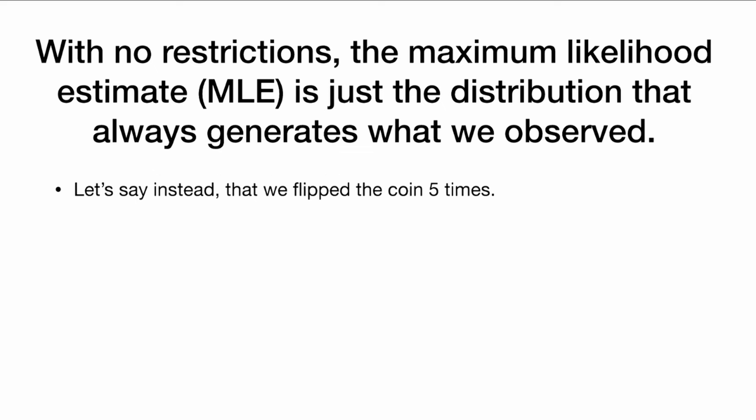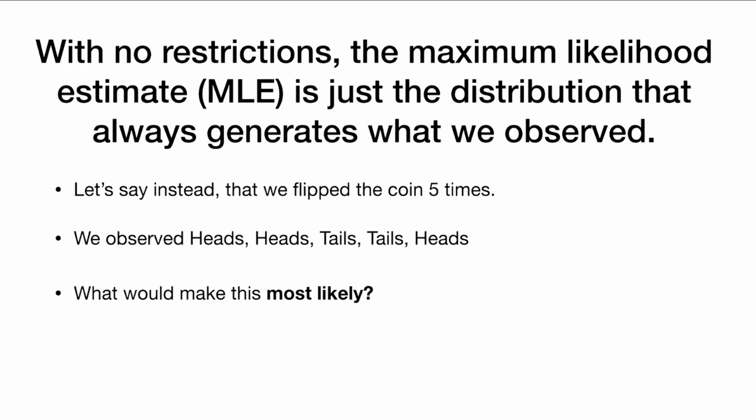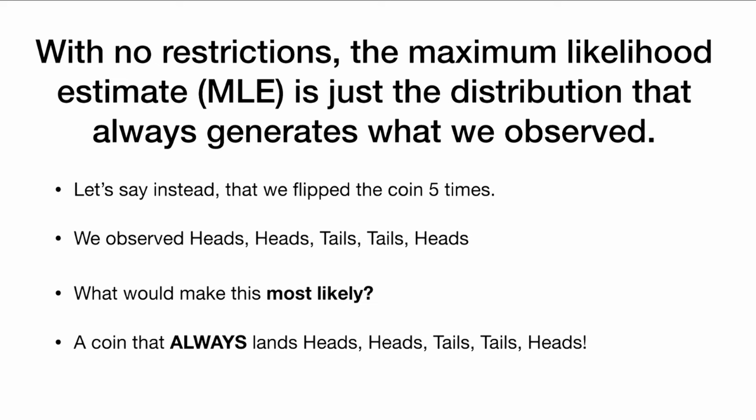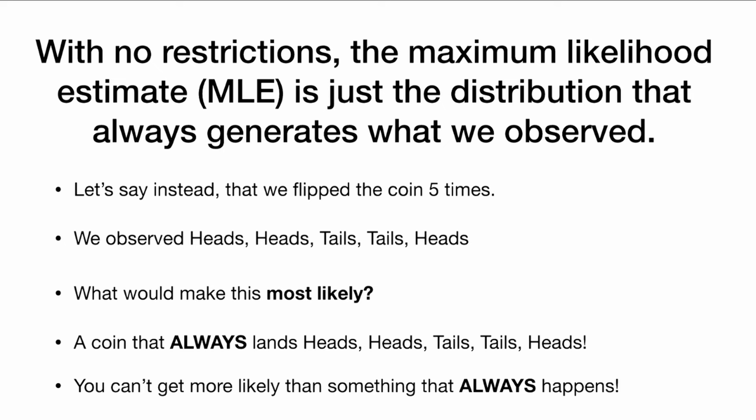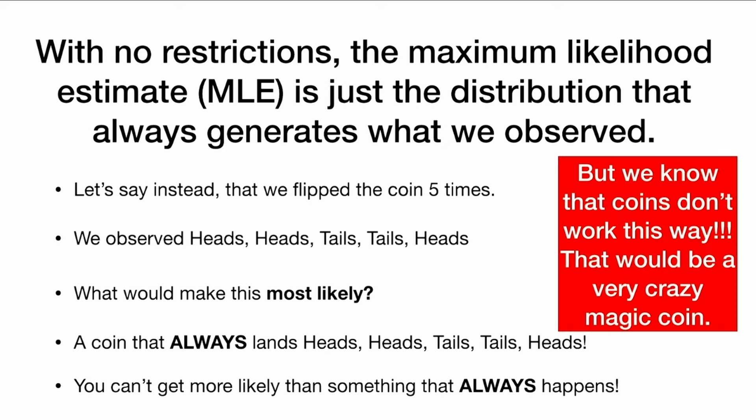So let's say instead that we flip the coin five times. We observed heads, heads, tails, tails, heads. What would make this most likely? Well, what would make this most likely is a coin that always lands heads, heads, tails, tails, heads when I flip it five times. You cannot get more likely than something that always happens. But we know that coins don't actually work this way — that would be a very crazy magic coin.